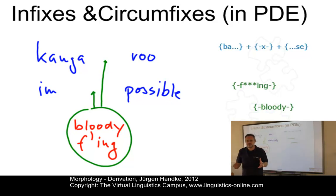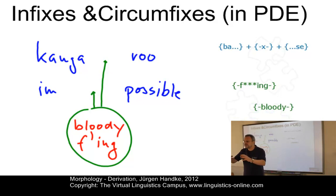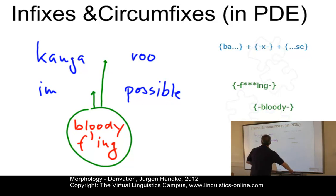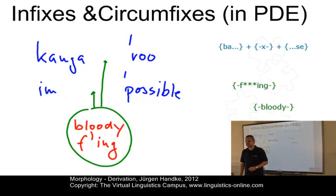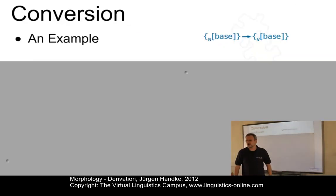Yet this process is restricted by a suprasegmental phonological constraint. The expletive material must be inserted between two feet — that is, a unit consisting of either one stressed syllable and one or more unstressed syllables. So 'kangaroo' and 'impossible' provide the stressed syllables. Now, here's another variant of derivation: conversion.